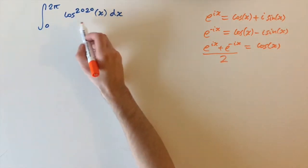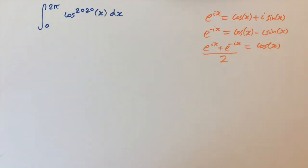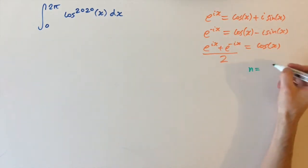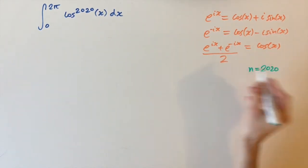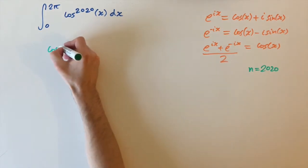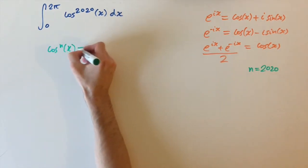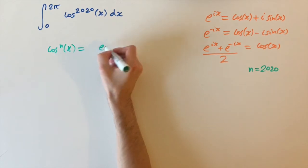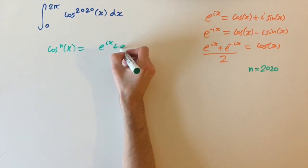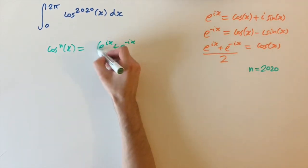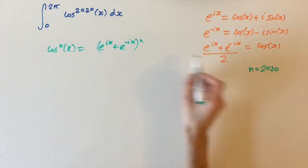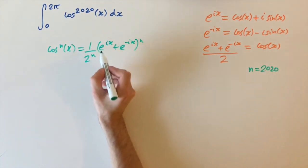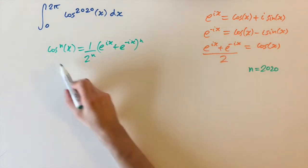We're going to look at cosine to the power of 2020. Since this number appears a lot, I'll call it n = 2020. So we need cosine to the power of n of x, which using this equation is just (e to the power of ix plus e to the power of minus ix) to the power of n, with a factor of one over two to the n out front.